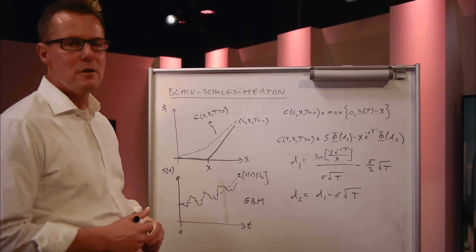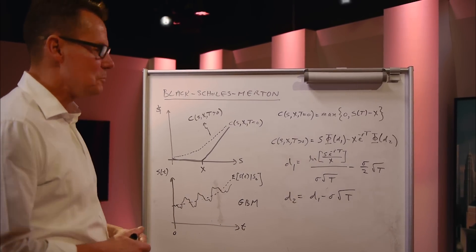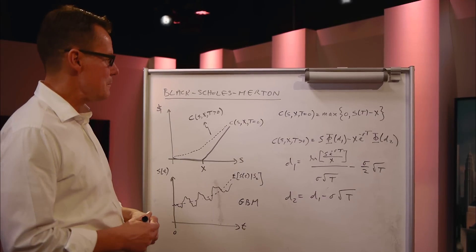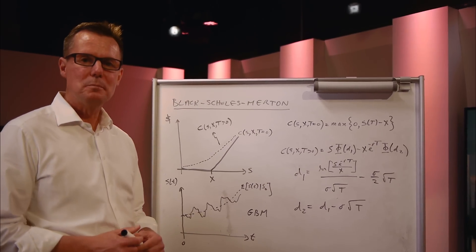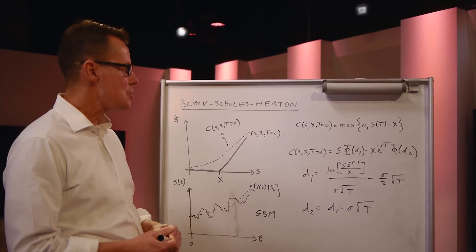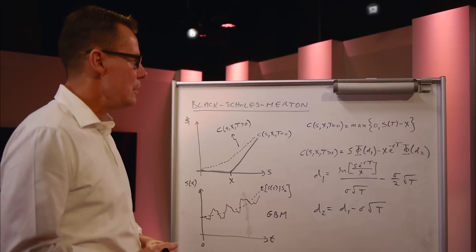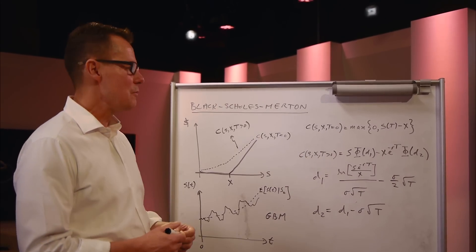The Black-Scholes model is a model of option pricing which has become ubiquitous in the industry. It's a model based on the principle of continuous replication of the option using the underlying security and a risk-free bond.